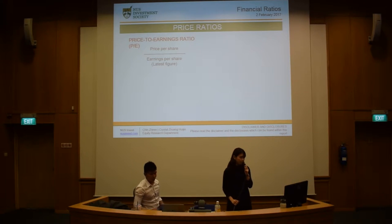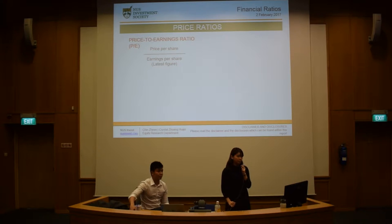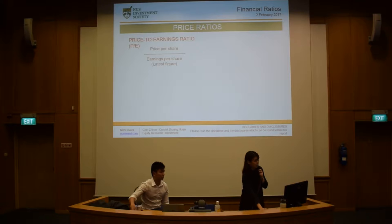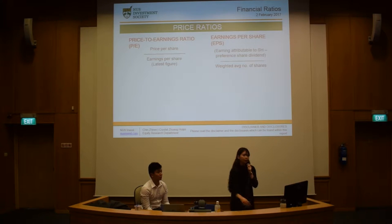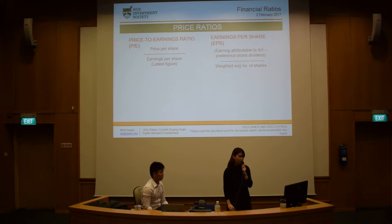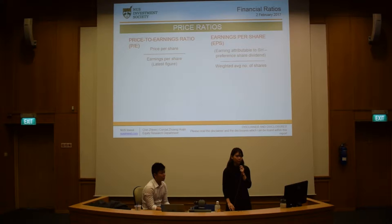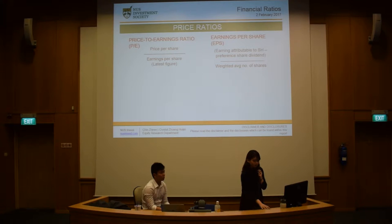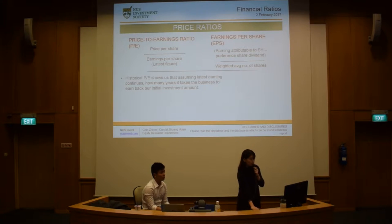To derive PE ratio, it's actually just price per share divided by earnings per share, and everything has to be the latest figure. The second ratio is earnings per share, or EPS for short, and it is earnings attributable to shareholders minus preference share dividend, over weighted average number of shares.